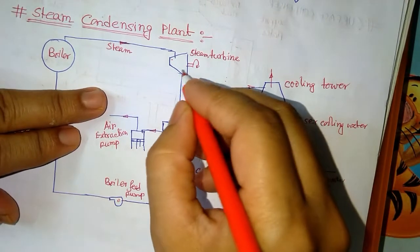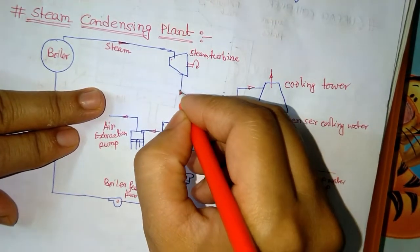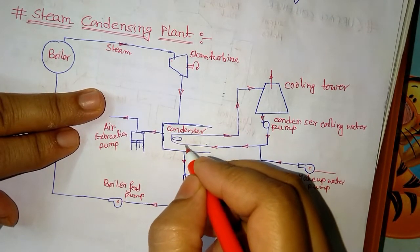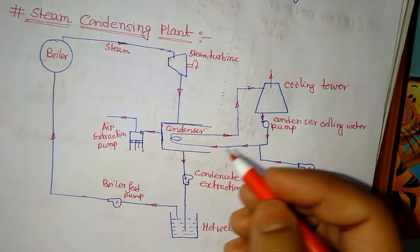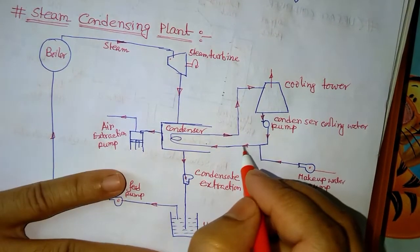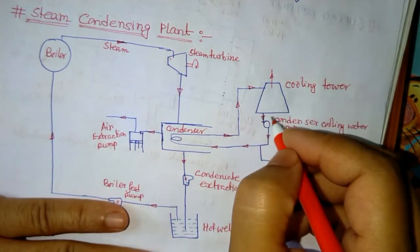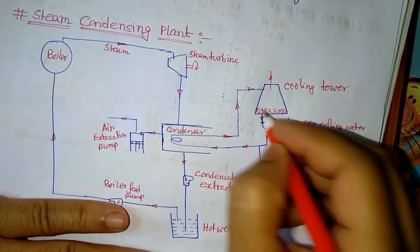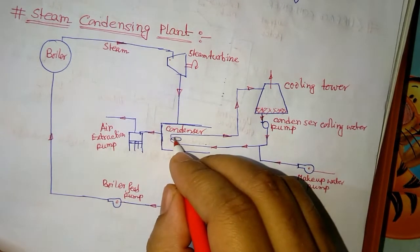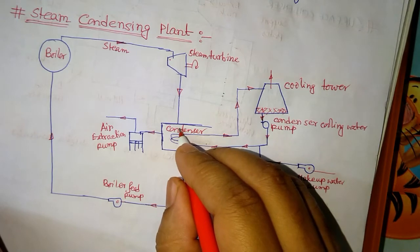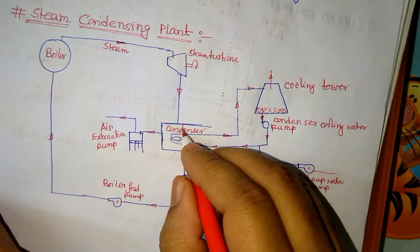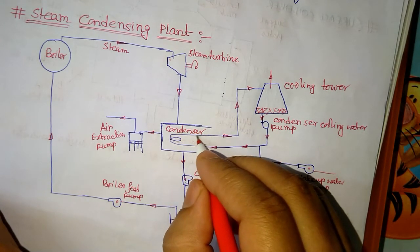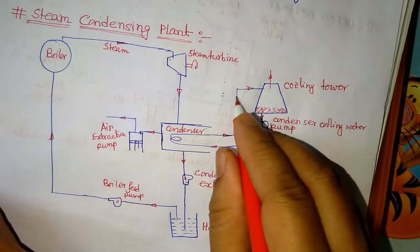After expanding the steam in the turbine, the expanded steam enters into the condenser and becomes saturated liquid. To make it saturated liquid, we have a cooling tower. Cold water from the cooling tower comes into the condenser, takes heat from the steam, and converts it to condensed liquid. The water temperature rises and then returns to the cooling tower.